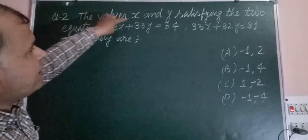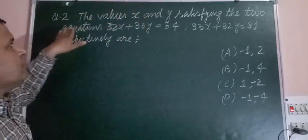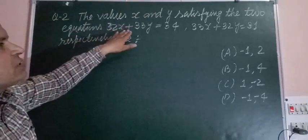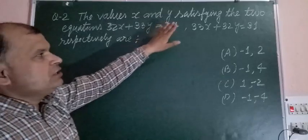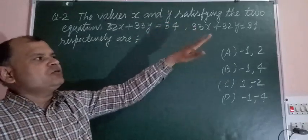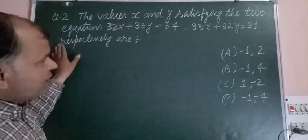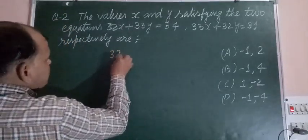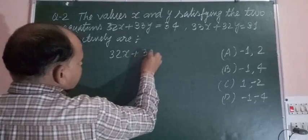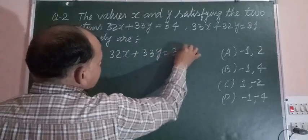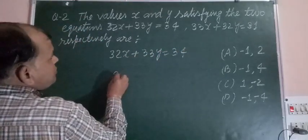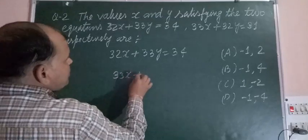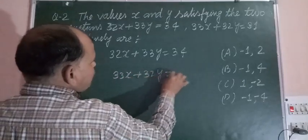The question says: the values x and y satisfy the two equations 32x plus 33y equal to 34, and 33x plus 32y equal to 31. Find the values respectively. So we take the two equations 32x plus 33y equals 34 and 33x plus 32y equals 31.